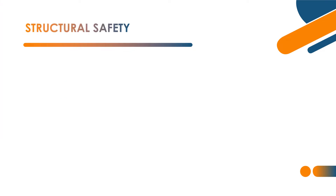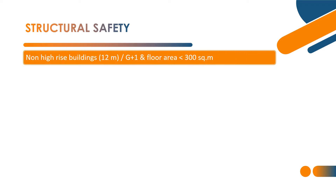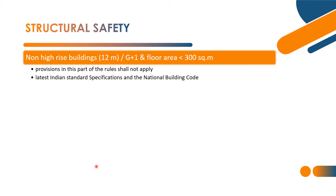Rule number 51 deals with structural safety. First point: non-high-rise buildings up to 12 meter height, or G plus 1 building, and having floor area less than 300 square meters — the provisions shall not apply, unless the authority has signed. All such applications and plans for this development shall be signed by the owner or registered developer.